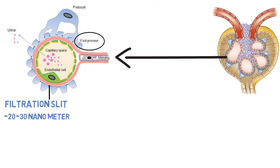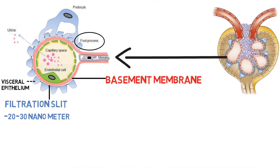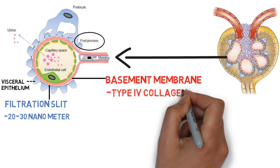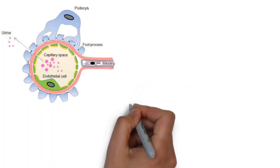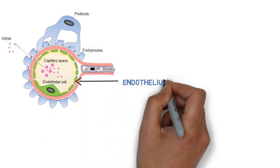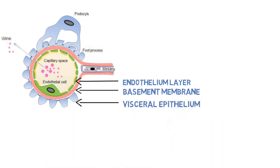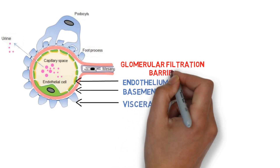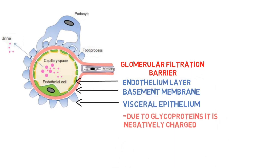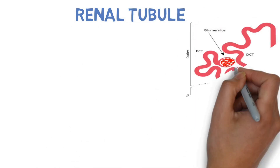Between the two layers — the capillary endothelium of the glomerulus and the visceral epithelium of Bowman's capsule — there is the glomerular basement membrane, which is made up of type IV collagen. All three layers — the endothelium of glomerular capillary bed, glomerular basement membrane, and visceral epithelium of Bowman's capsule — form the glomerular filtration barrier. Since the filtration barrier contains a large amount of glycoproteins, they are negatively charged. Hence the filtration barrier acts as both a charge barrier and a size barrier.